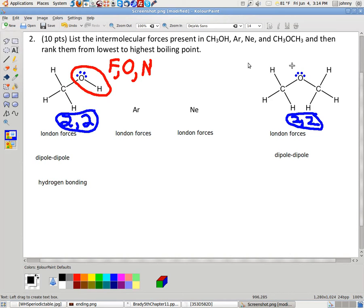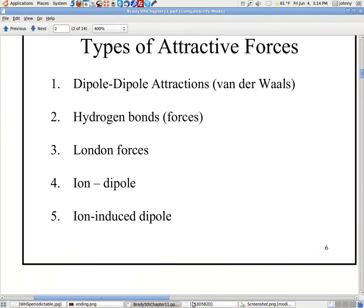Now, as far as which of the following rank them by lowest to highest boiling point. The lowest would be, well, starting with the most simple of forces, these two here. Well, which one do you write down first, Ne or Ar? Well, that's where we need to look at a periodic table.